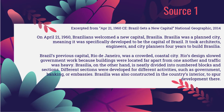Source one is an excerpt about Brazil getting a new capital, published in National Geographic in 2014. On April 21st, 1960, Brazilians welcomed a new capital: Brasilia. Brasilia was a planned city, specifically developed to be the capital of Brazil — it took architects, engineers, and city planners four years to build. Brazil's previous capital, Rio de Janeiro, was a crowded coastal city whose design slowed government work because buildings were far apart and traffic was heavy. Brasilia is neatly divided into numbered blocks and sections for different activities such as government, banking, or embassies, and was constructed in the country's interior to spur development there.